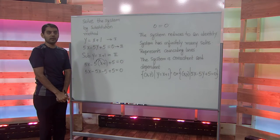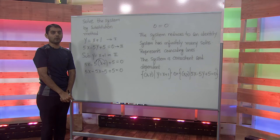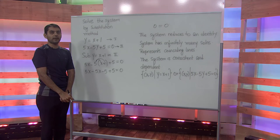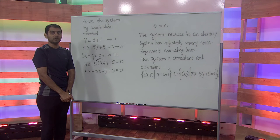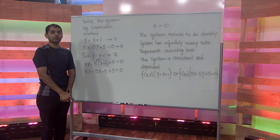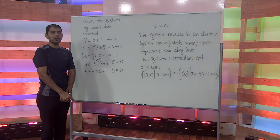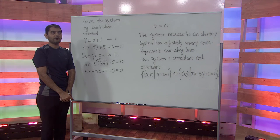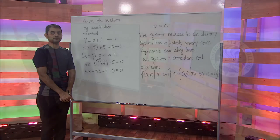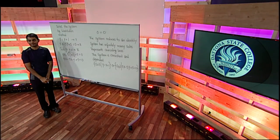In summary, we discussed how to solve the system of linear equations by the method of substitution. In this example, the system reduces to an identity. Hence, the system represents coinciding lines and each point on the line is a solution to the system. Therefore, we have infinitely many solutions.